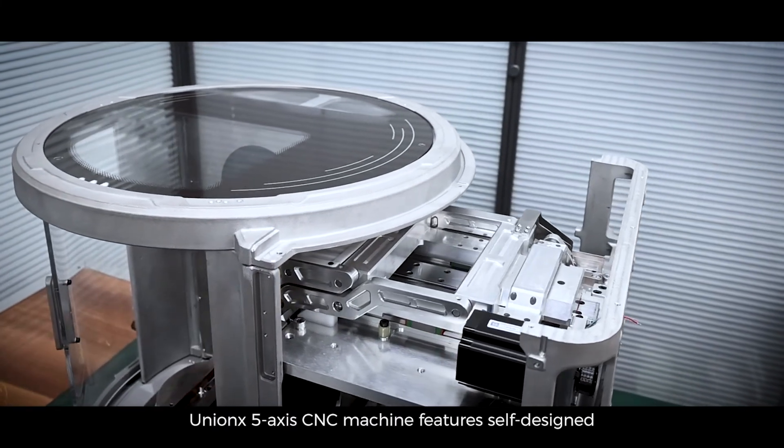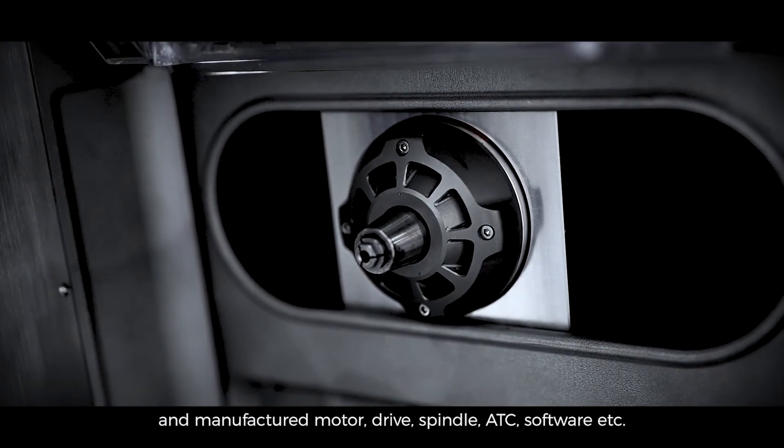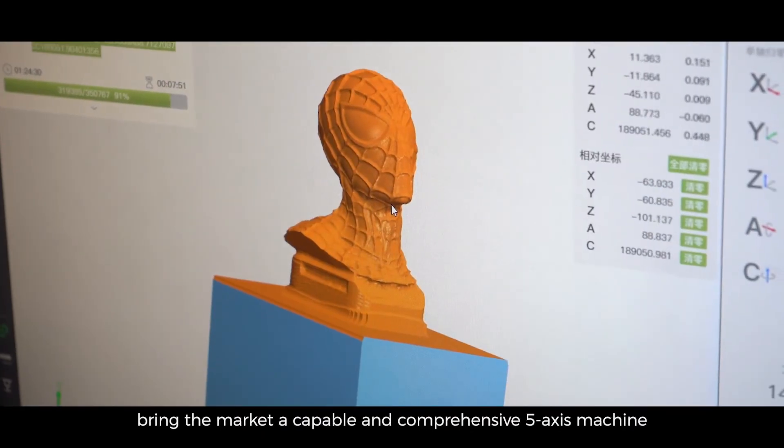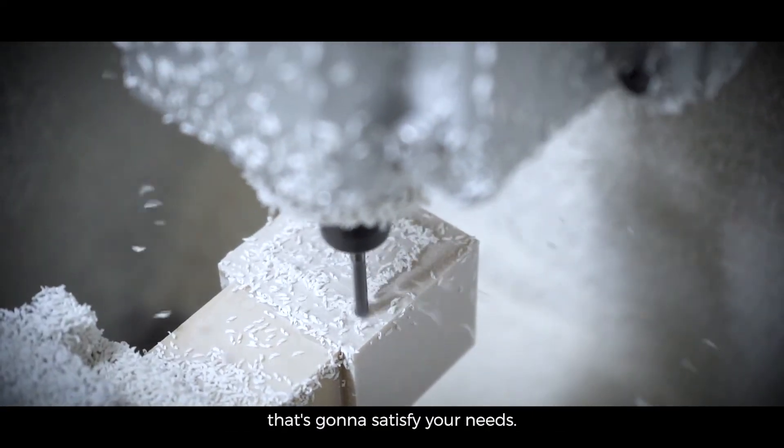Unix's 5-axis CNC machine features self-designed and manufactured motor, drive, spindle, ATC, software, etc. We are confident that we are going to bring the market a capable and comprehensive 5-axis machine that's gonna satisfy your needs.